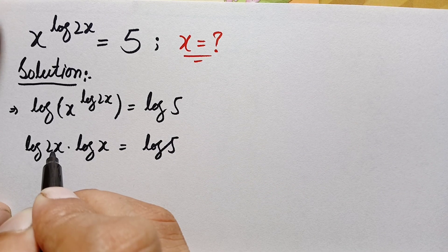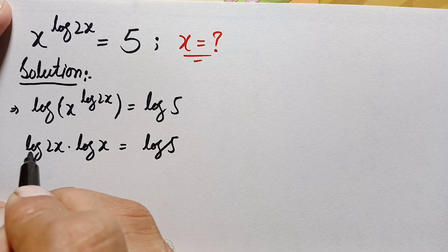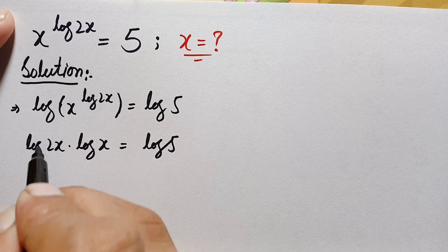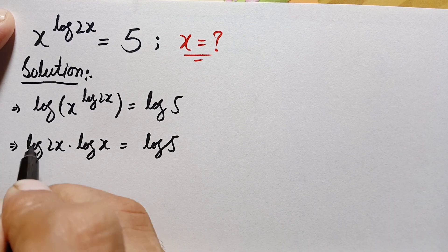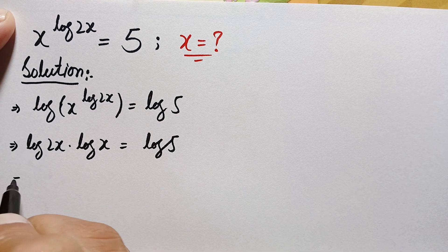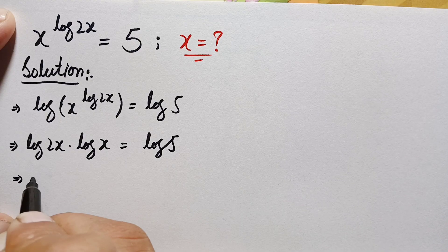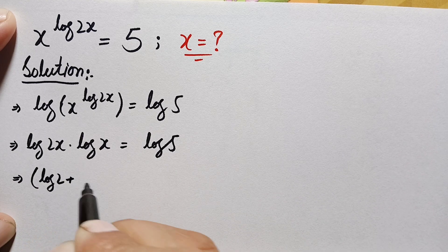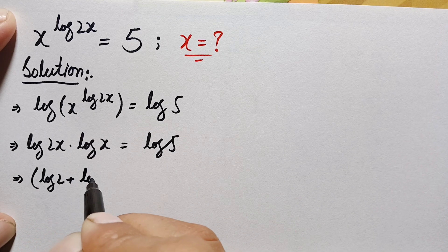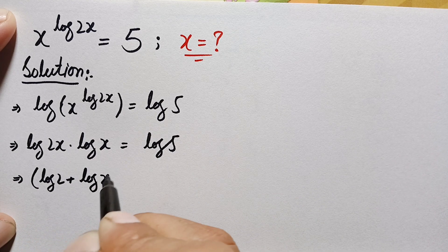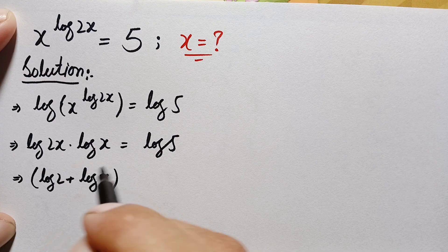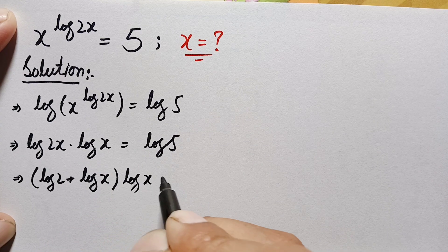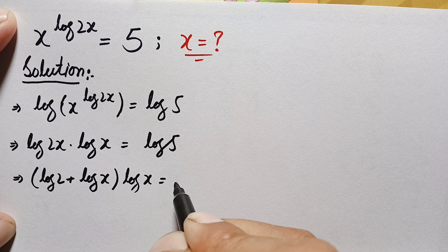Now log(2x) is in the form log(a·b), which equals log a + log b. So this expression becomes: (log 2 + log x) times log x is equal to log 5.